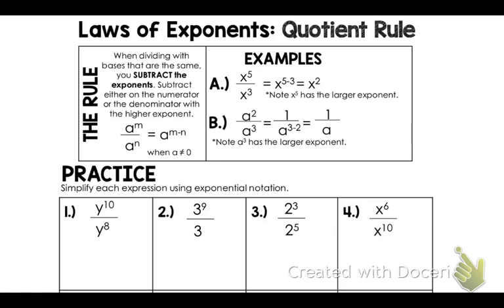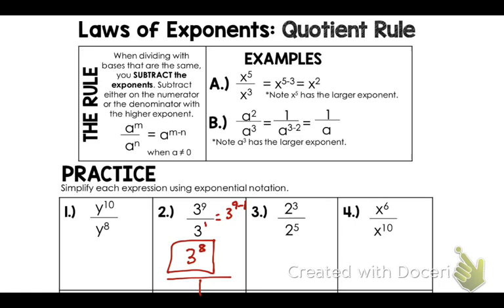For example, let's look at number two: three to the ninth power divided by three — which is technically three to the first power. I want to see which one has the higher exponent; it's the nine. Because three to the ninth is at the top, I'm going to rewrite this as three to the ninth power minus one, which gives me three to the eighth power, still up in the numerator.